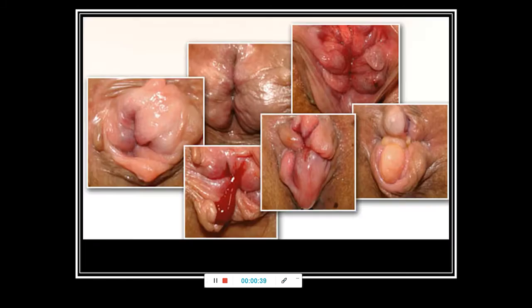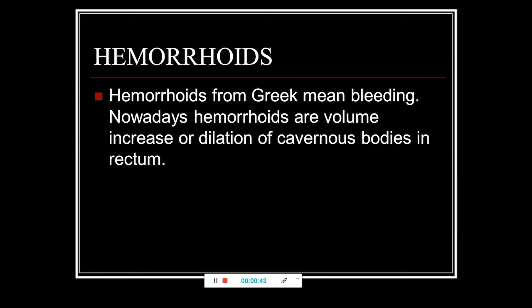First we'll talk about hemorrhoids. If you translate this name from ancient Greek, it would mean bleeding. This is so because the main symptom, the main sign of hemorrhoids, is of course rectal bleeding. The special thing about the bleeding is that it always appears after the toilet, after defecation. This is the first important differential sign. And the second one: the blood almost always has a bright red color.